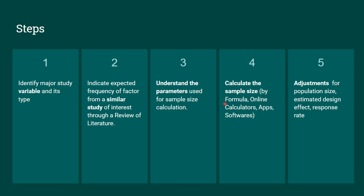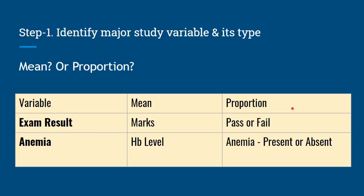Formulas are the more complicated method to calculate sample size, which I am going to demonstrate, and online calculators are the easiest, which will also be demonstrated in the end. Step five is the adjustments. There are three adjustments: adjustments for population size, design effect, and response rate. So now we are going to deal with each step in detail.